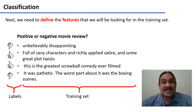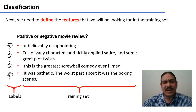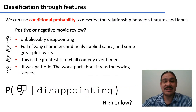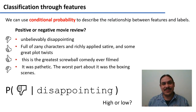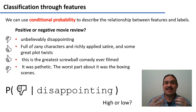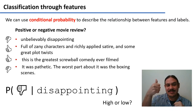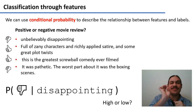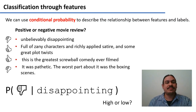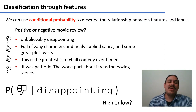We need to define the features, which is not a trivial task. Let's do something very simple and use words as features, as we've been doing in the last couple of weeks. Maybe the word 'disappointing' can tell us if a review is positive or negative. We want to figure out whether the probability that a review is negative given that it contains the word 'disappointing' is high or low. By the way, this is conditional probability like we studied last week. In Bayesian terms this would be read as: the probability that a review is negative given that we see the word 'disappointing.'